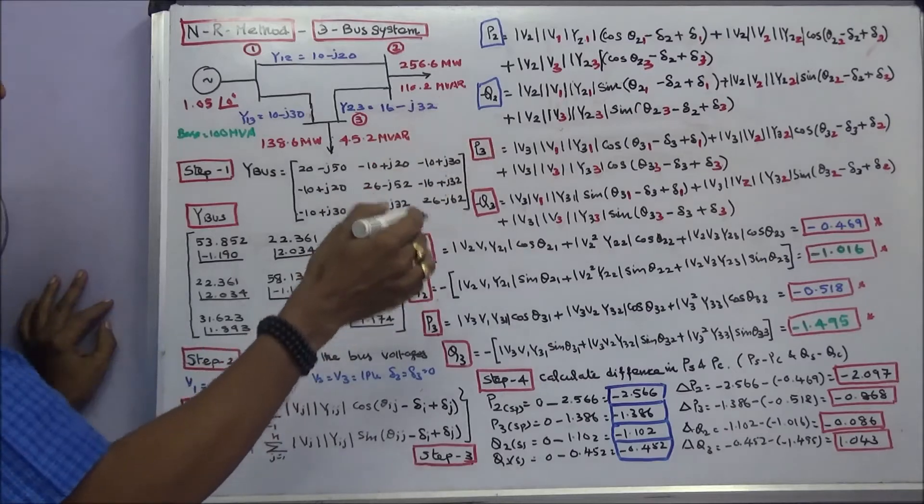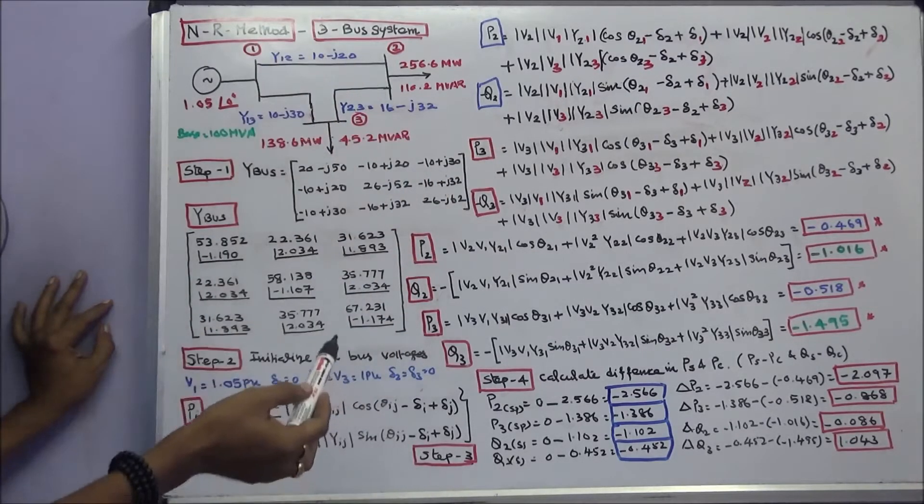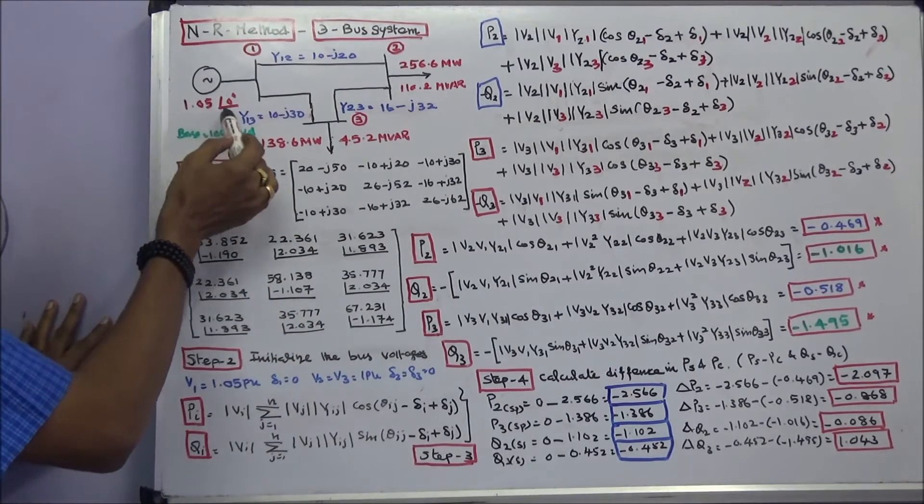This class we work out one problem using Newton-Raphson method. We have a three bus system. One bus is a slack bus with voltage 1.05 angle zero degrees.